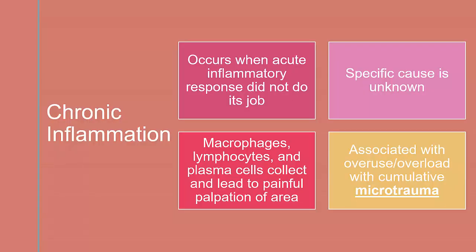Chronic inflammation occurs when the acute inflammatory response does not eliminate an injuring agent. The tissue is not restored to normal physiological states, and involves the replacement of leukocytes with macrophages, lymphocytes, and plasma cells. As inflammation persists, necrosis and fibrosis prolong the healing process. Granulation and fibrotic tissue continues to develop within the highly vascular and loose connective tissue. The exact cause for a shift from acute to chronic inflammation is unknown; however, it is typically associated with overuse or overload with cumulative microtrauma to a particular structure.